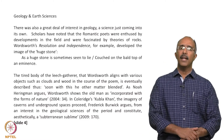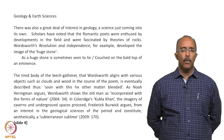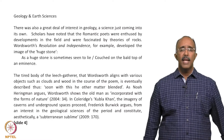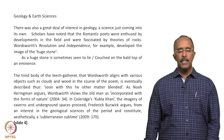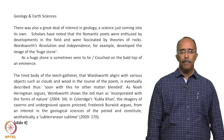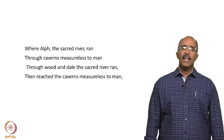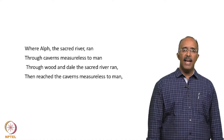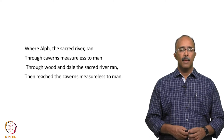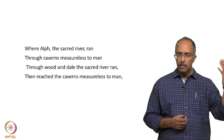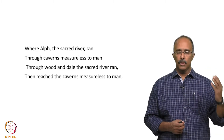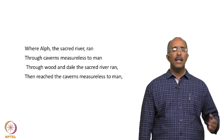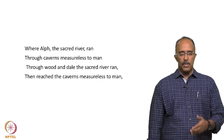In Coleridge's Kubla Khan, the imagery of caverns and underground spaces proceed, as critics like Frederick Berwick have argued, from an interest in the geological sciences of the period and constitute aesthetically what Berwick calls a 'subterranean sublime.' Here is a passage from Coleridge's most famous poem, Kubla Khan: 'Where Alph the sacred river ran through caverns measureless to man. Through wood and dale the sacred river ran, then reached the caverns measureless to man.' The sacred river — sacred being the realm of the religious and the theological — moves through caverns measureless to man, a clear reference to geological studies of rocks and rock formations.